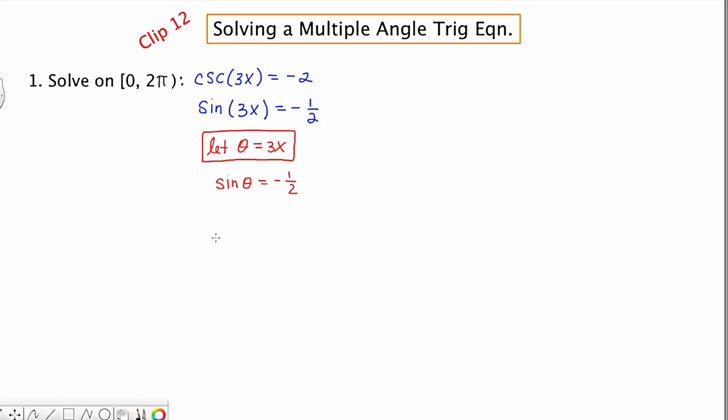Now I know that sine is negative in quadrants 3 and 4, and it has a reference angle of pi over 6. So in the first case, theta is equal to 7 pi over 6, and all of its coterminal equivalents. That means I just keep rotating a revolution, and another revolution, and another revolution.